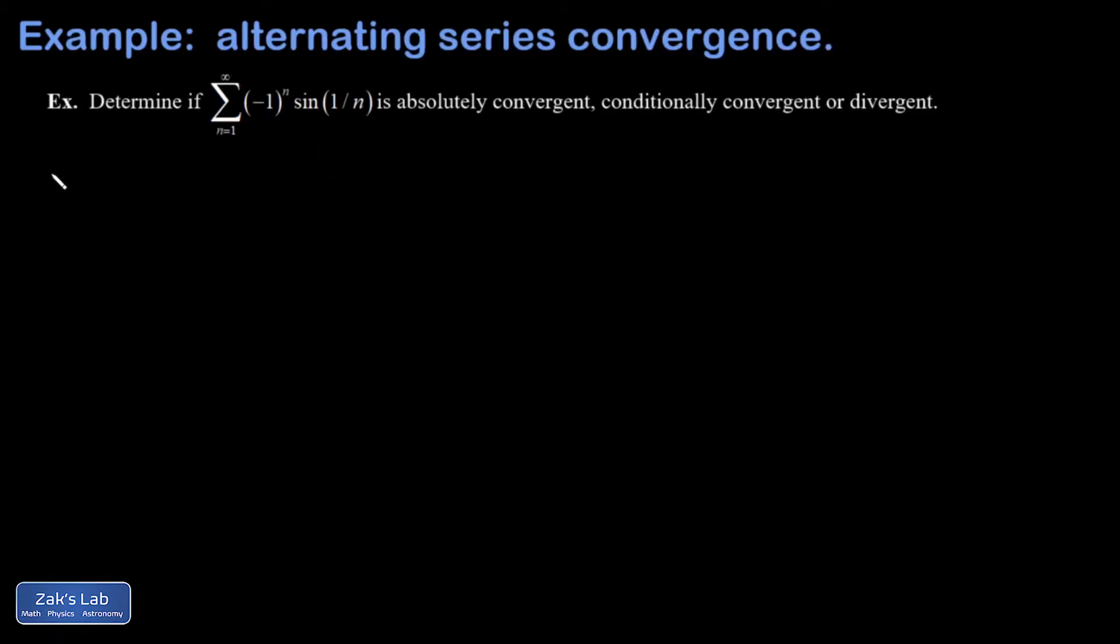So we always start out by looking for absolute convergence. That means we test the convergence of the series of absolute values of these terms. If that series converges, it automatically implies ordinary convergence as well. That's why it's more efficient to start this way.